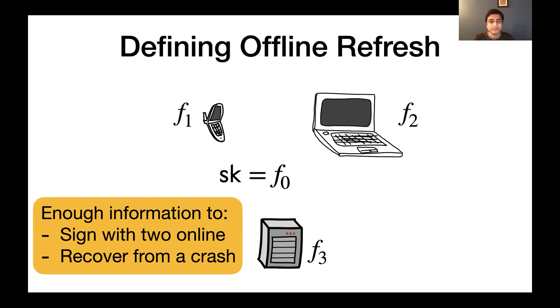And we define the evaluation of f at 0 as the common secret, the signing key sk. This is a useful configuration because now we can sign with the two online devices, let's say the phone and the laptop. And in case of some sort of error or a crash, we can bring the offline server back online and we can use its information to now recover the secret.